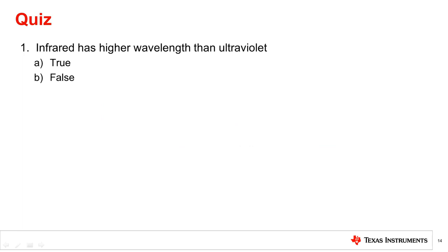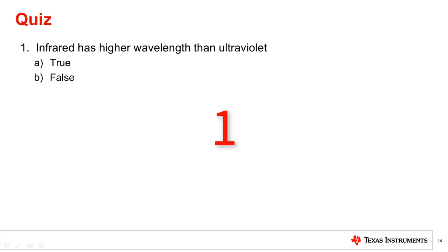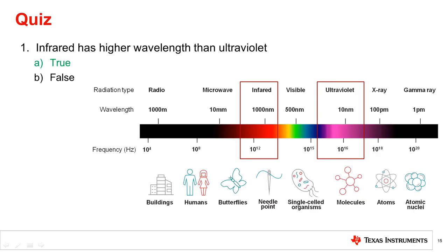Question 1: Infrared has a higher wavelength than ultraviolet. Recalling the electromagnetic spectrum, infrared wavelengths are above 700 nanometers, while UV wavelengths are below 400 nanometers. Thus, the statement is true.